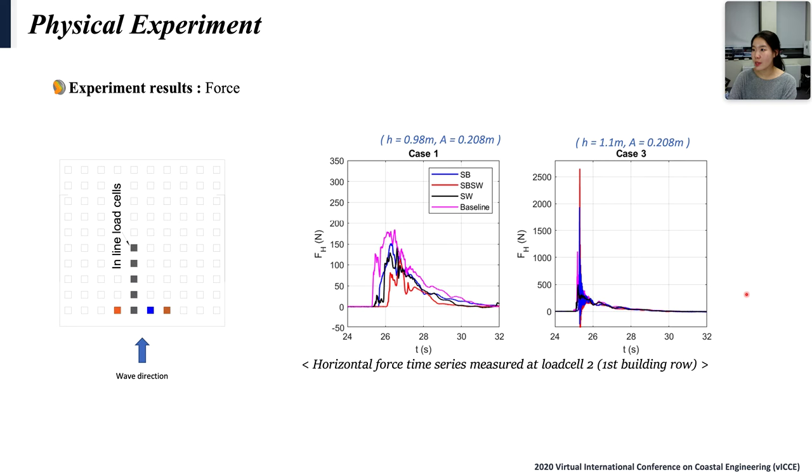In this space, the time series of horizontal force measured at first building row is shown. In case 3, large impulse forces or slamming forces were captured in submerged breakwater and seawall with submerged breakwater cases. Like what you see here, in the higher water level, the submerged breakwater may generate impulsive forces. So, countermeasures may generate larger impulsive forces than baseline.